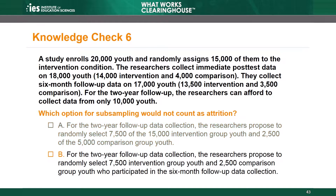The correct answer is A. The sub-sampling does not count as attrition using this approach. The researchers propose to select a sub-sample from the initial randomized sample to follow up. The WWC would assess attrition at the 2-year follow-up time point relative to the 10,000 youth selected in the random sub-sample.